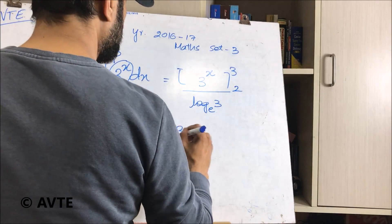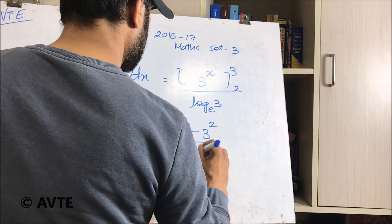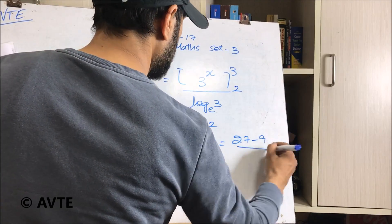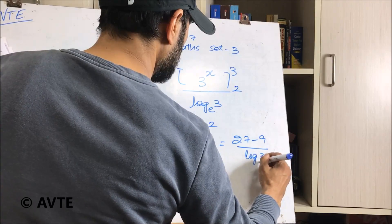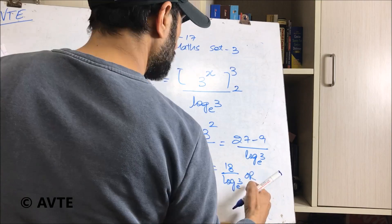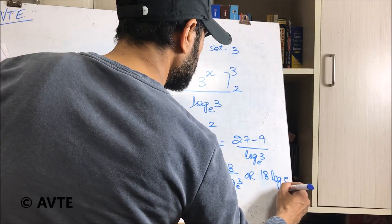So upper limit minus the lower limit. So the answer is 27 minus 9 upon log 3 base e. So this is 18 upon log 3 base e or 18 log e base 3.